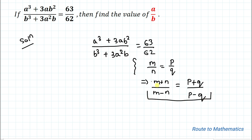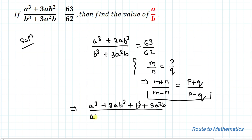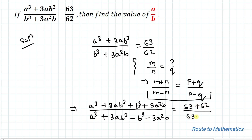By applying the componendo and dividendo method, let's consider a³ + 3ab² as m and b³ + 3a²b as n. So we can write (a³ + 3ab² + b³ + 3a²b) divided by (a³ + 3ab² − b³ − 3a²b) equals (63 + 62) divided by (63 − 62).